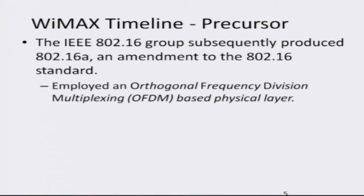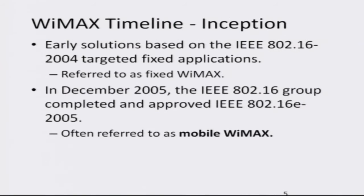The 802.16 group subsequently produced 802.16a, which is based on a novel technology known as OFDM, or Orthogonal Frequency Division Multiplexing. This is an interesting and very robust standard which forms the basis for a large number of 4G wireless standards because it supports a very high data rate.